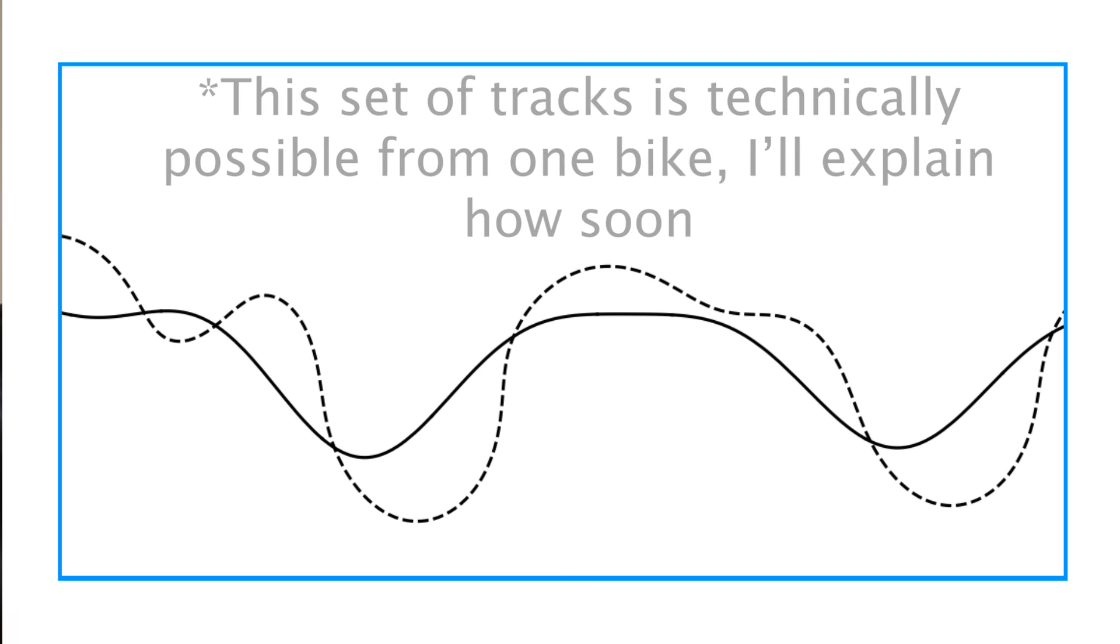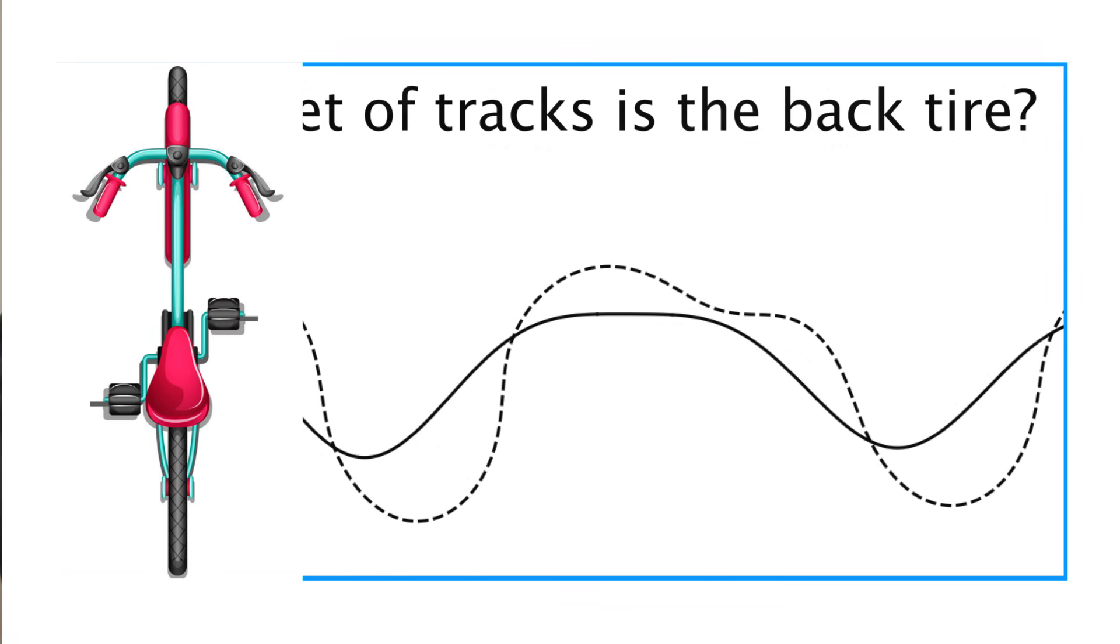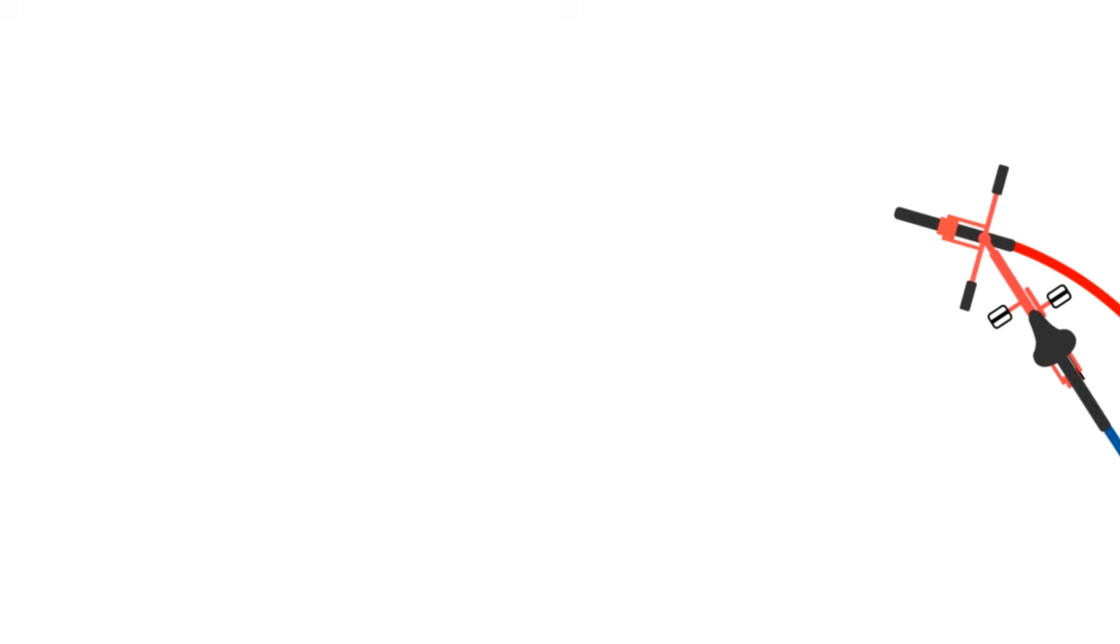The first question we need to answer is, which of the two sets of tracks is the back tire? Well, think about how a bike works. The front tire always points in the direction of motion at that instant in time. If the bike looks like this and you start pedaling, the direction of motion would be in this direction, the way the front tire is pointed. So when we look at the tracks created by the front tire, the tangent line points in the direction the bike was going at that instant.